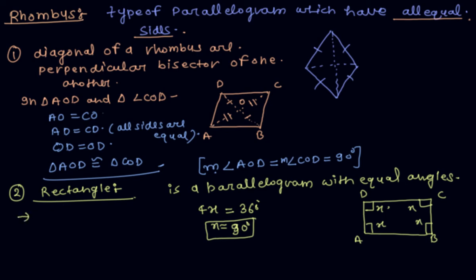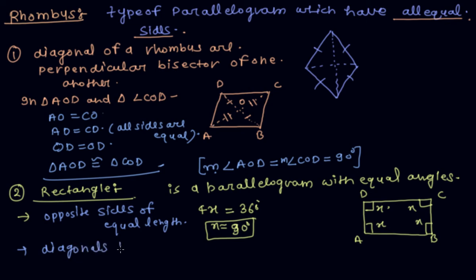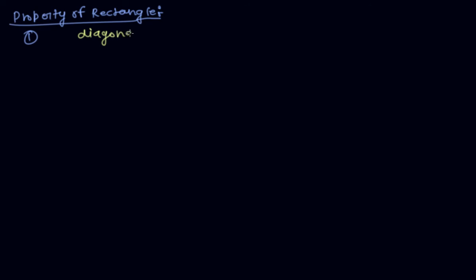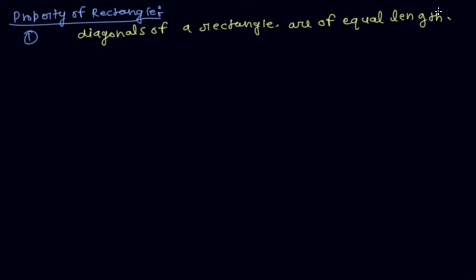Because a rectangle is also a parallelogram, it has opposite sides of equal length, and its diagonals bisect each other. One more property of a rectangle is that the diagonals of a rectangle are of equal length.